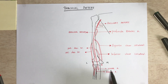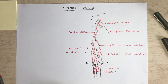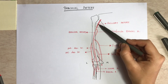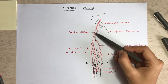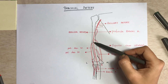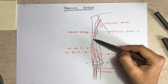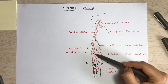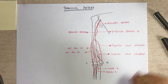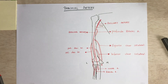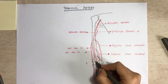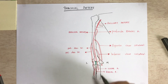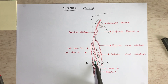The brachial artery terminates at the level of the neck of the radius, where it divides into two terminal branches: the ulnar artery and the radial artery. Its course runs downwards and laterally in the arm, reaching the cubital fossa medial to the tendon of the biceps brachii muscle.